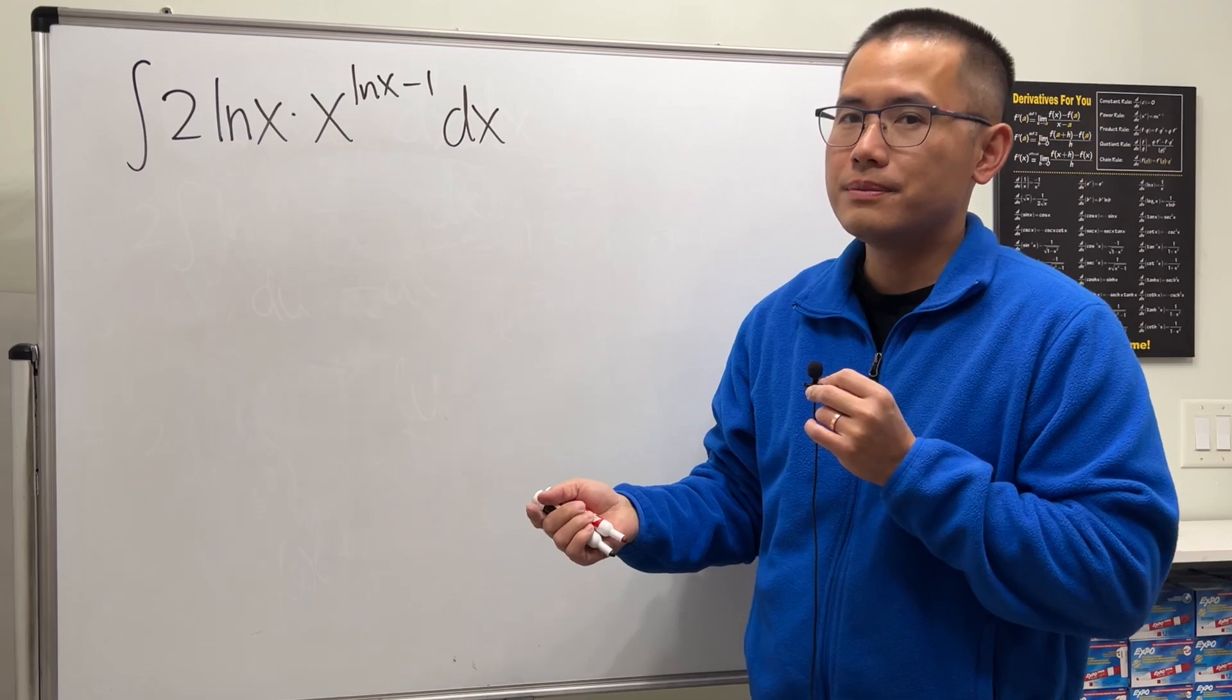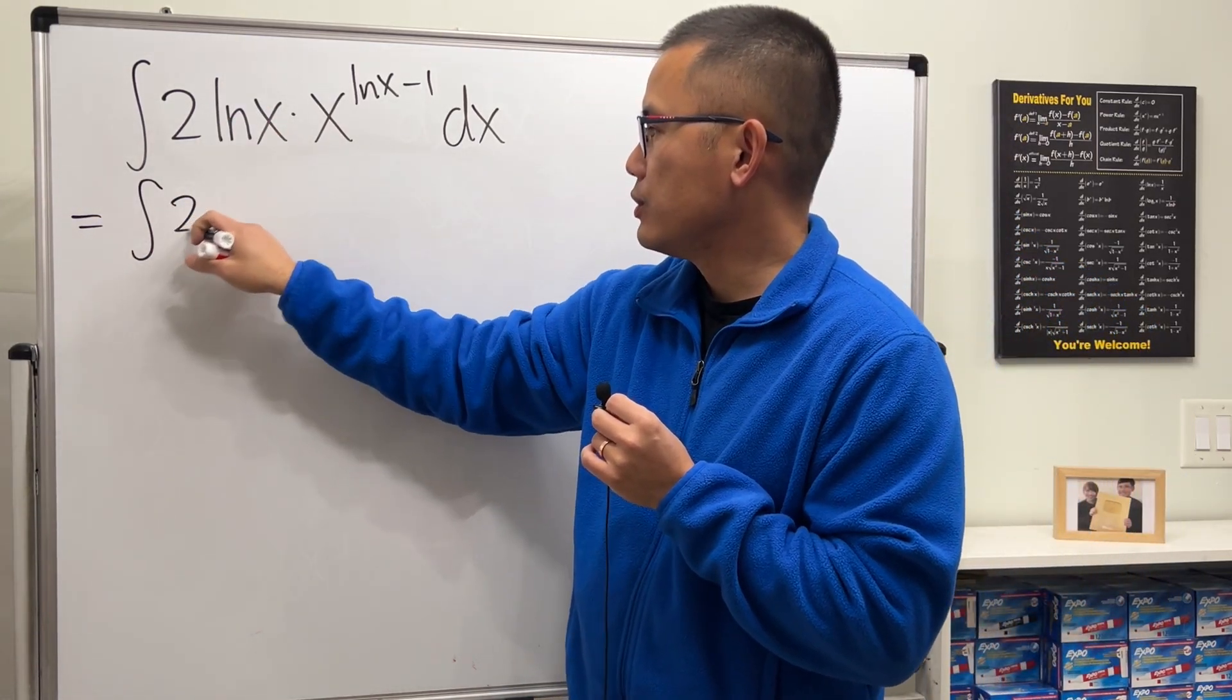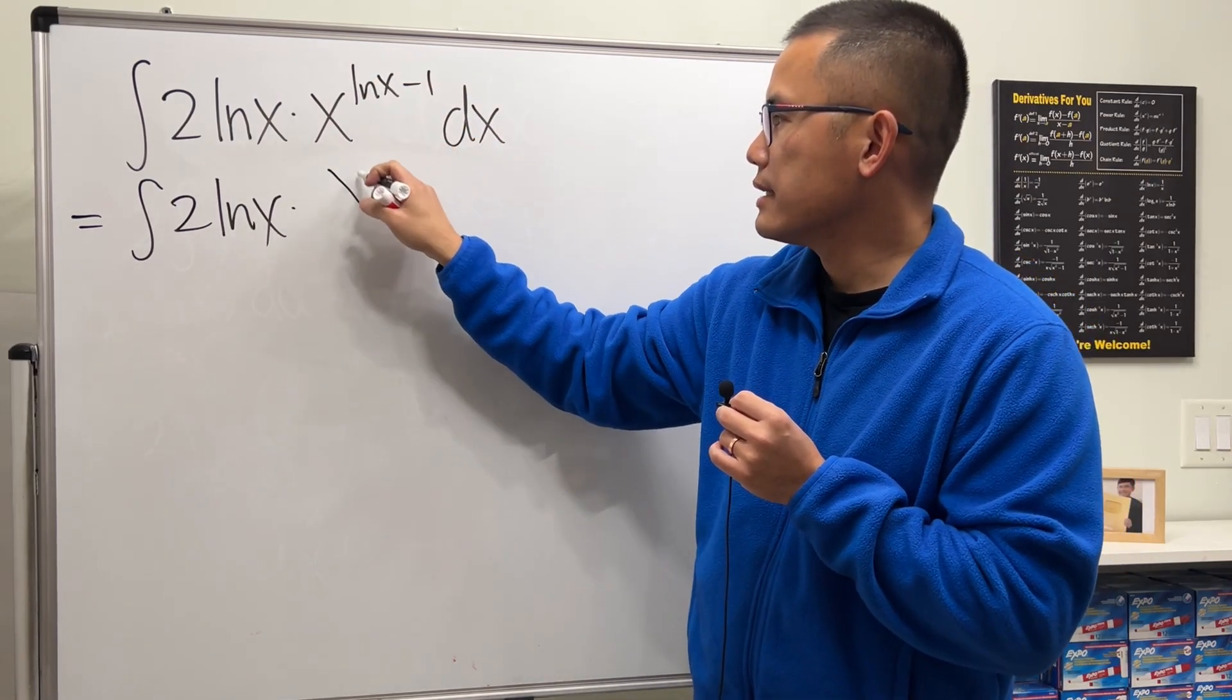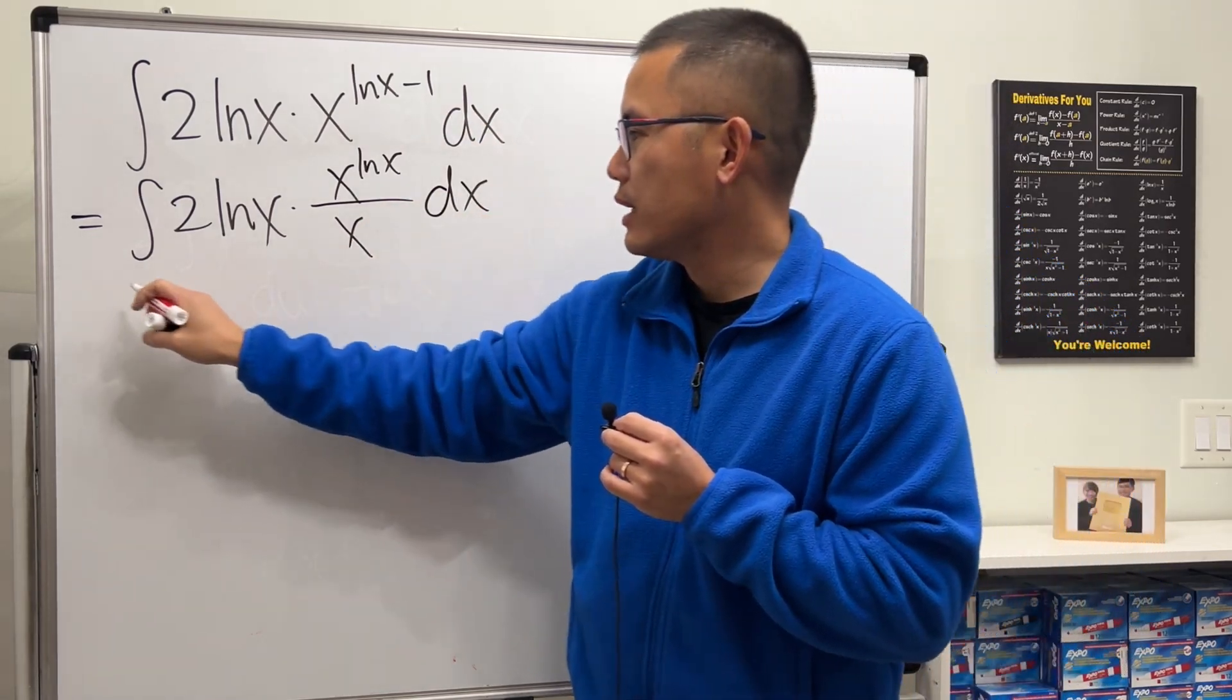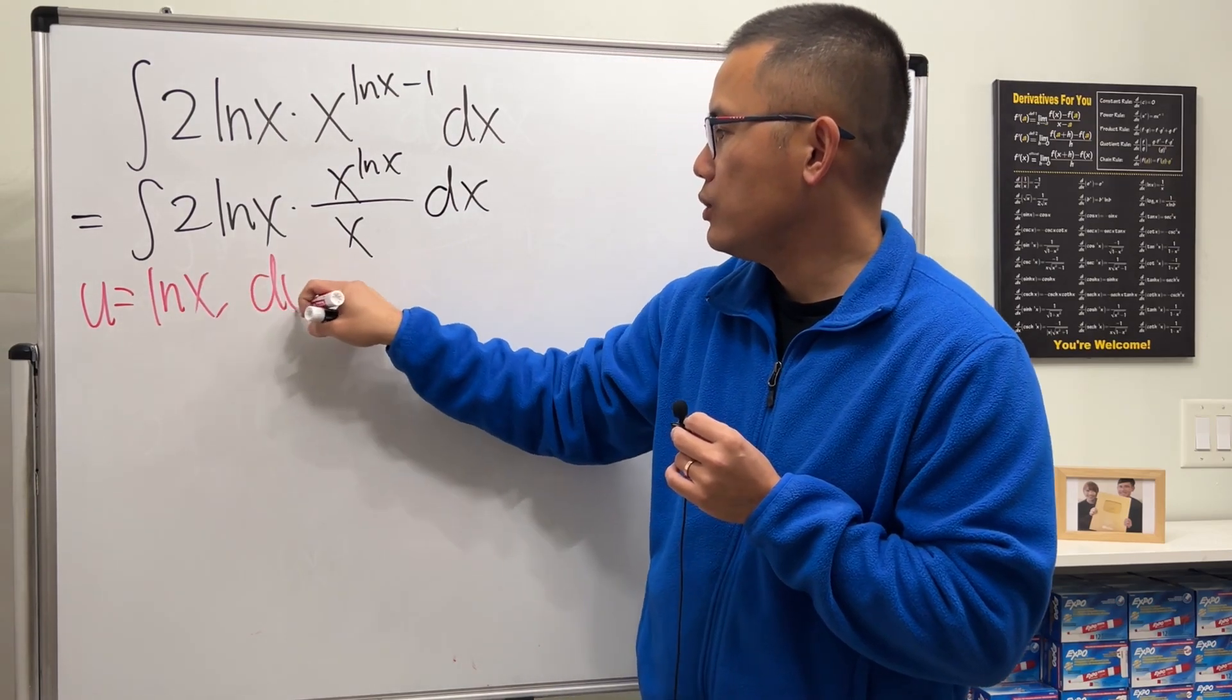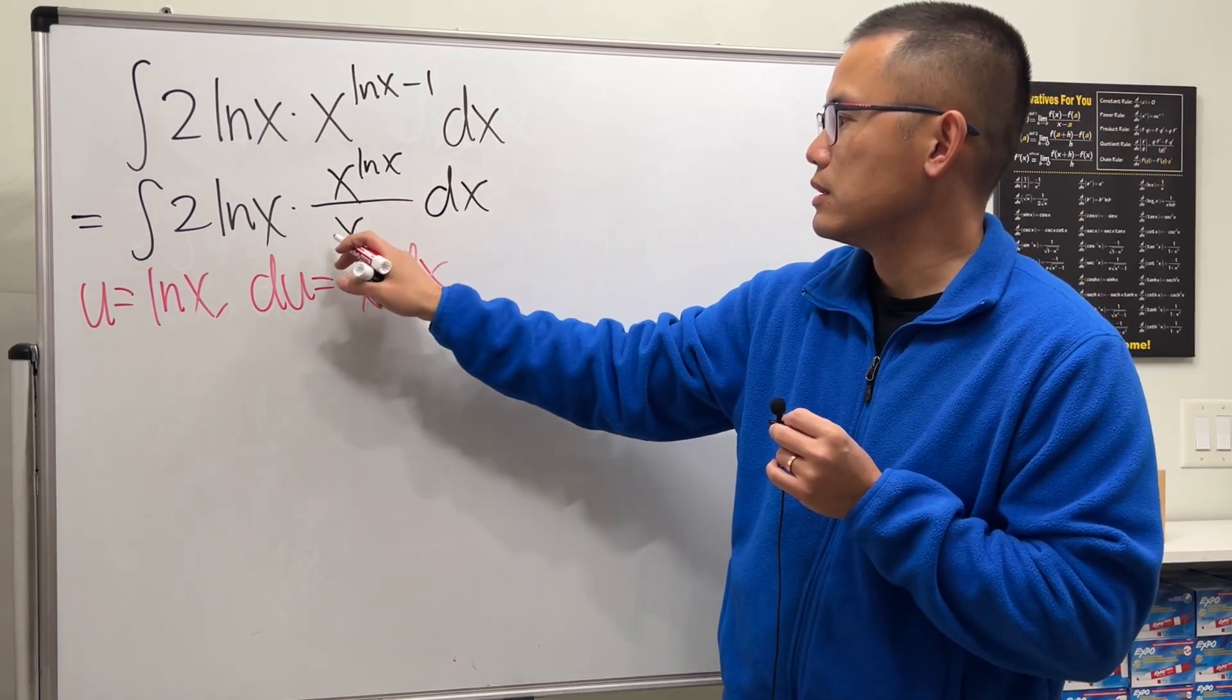So let me break this down for you guys. Integral, this is 2 lnx, I will write this as x to the lnx power over x to the first power. So that way when we take u to be lnx, we see that du is the same as 1 over x dx, which is this part right here.